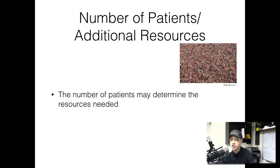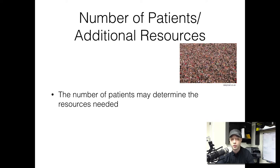Once you move past that, you want to determine your number of patients. This specifically applies to a mass casualty incident. If you have 40 patients, you need to know that. And if you have that many patients, you're going to need the proper amount of resources to actually assess and treat them. If it's just you and your partner and an ambulance, you probably don't have enough for more than one or two patients. So you want to know how many patients you actually have and how many resources you have at your disposal.